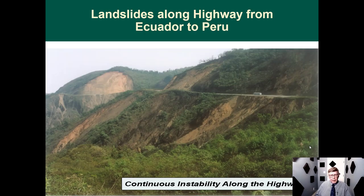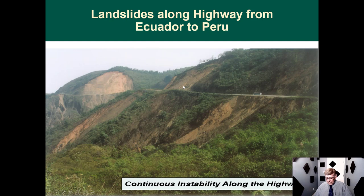It's not always easy to find where the limits are of the sliding mass. This picture was taken along the highway between Guayaquil, Ecuador and Peru. Along this roadway you can see large scarps of mass movement above the road and large movements below. In fact, there are so many movements that one sliding mass intersects with another, making it complicated to determine where to start the stability analysis.